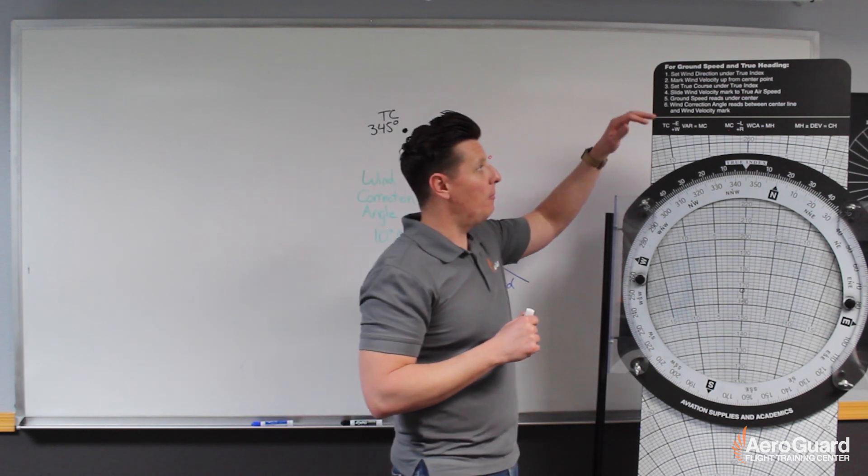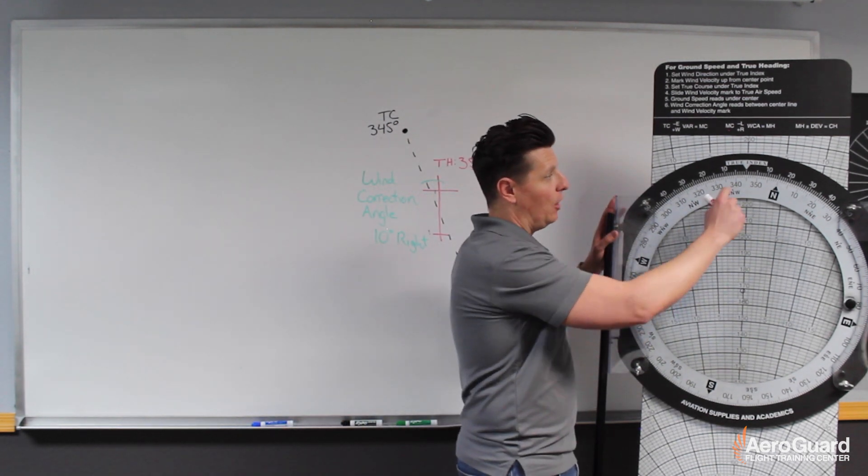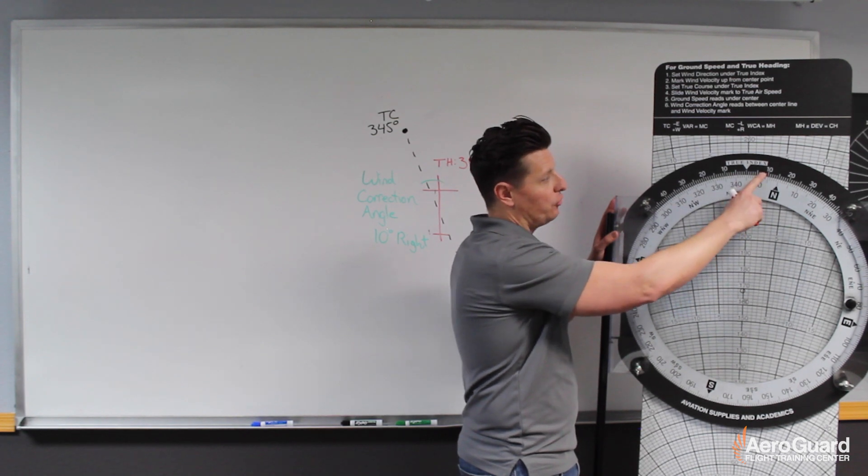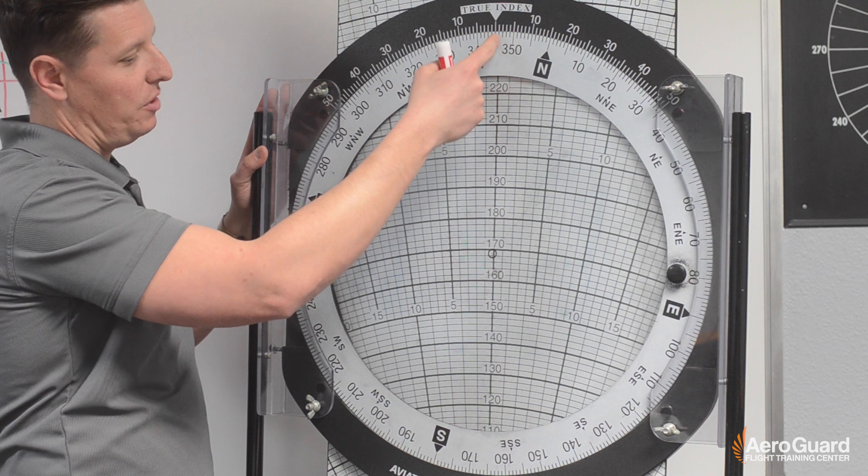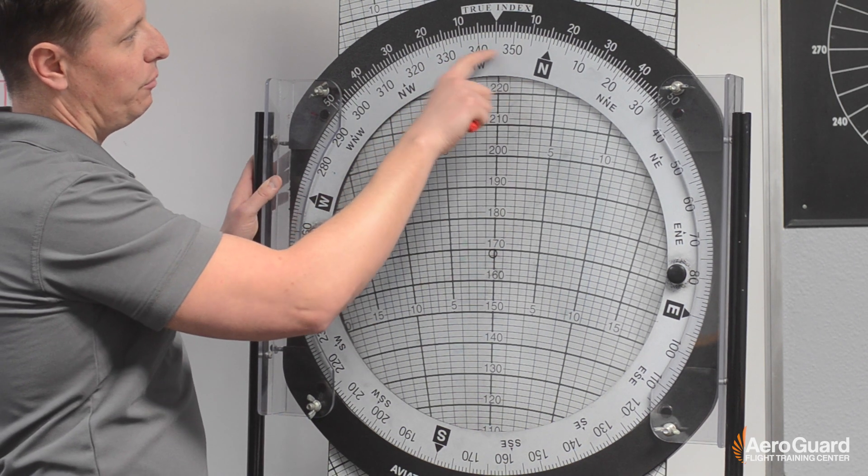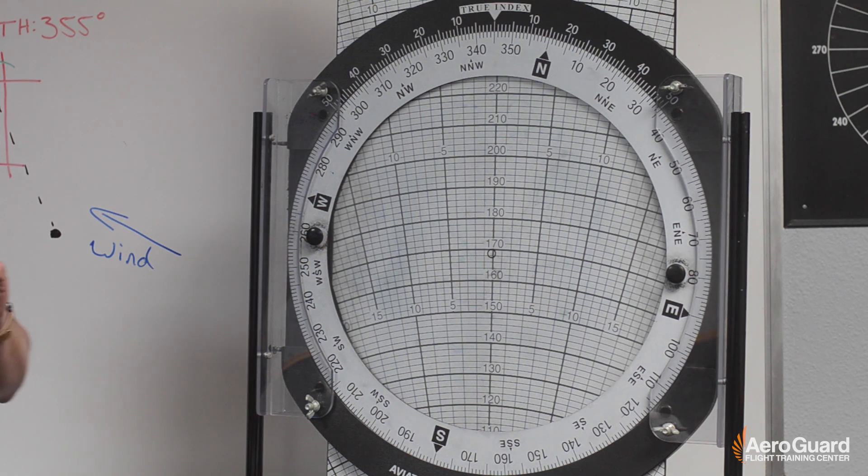So, starting from the end, we're going to set this up by having our true course under our true index. So our true course in this case is 345 degrees. So as you see here, I've rotated 345 degrees under our true index.